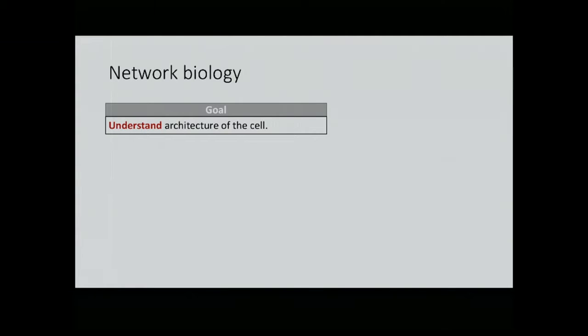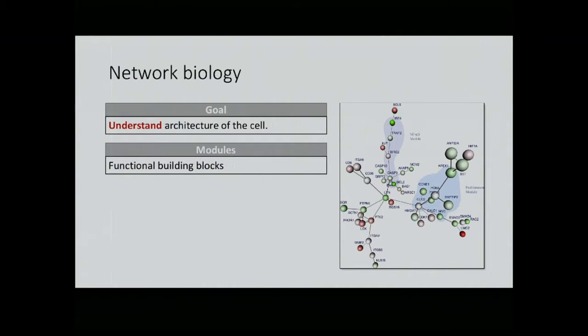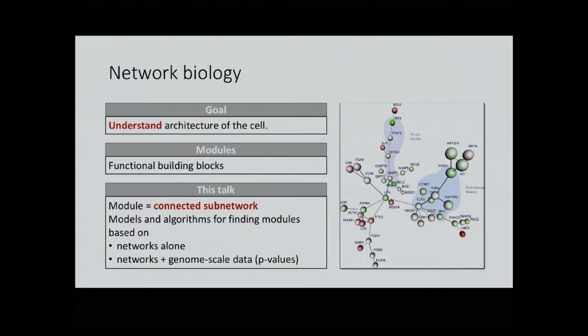In network biology, the goal is to understand the physical and functional architecture of the cell in terms of abstract network models, and then exploit this knowledge for finding new drug targets, improving methods for classification, et cetera. This is a very ambitious goal. As we all know, the cell is very complex. But luckily the cell is organized in terms of modules - more or less well-defined functional building blocks that help the cell carry out its function.